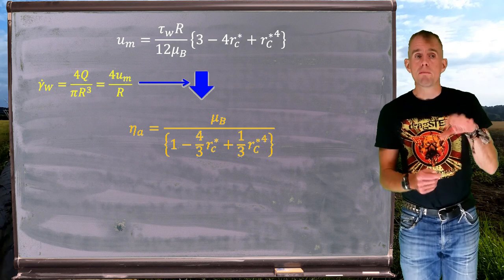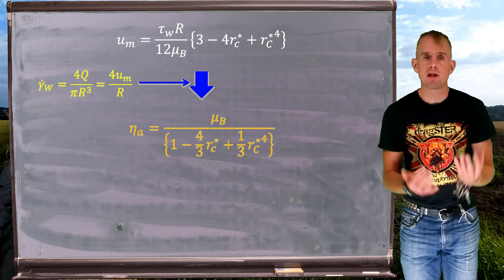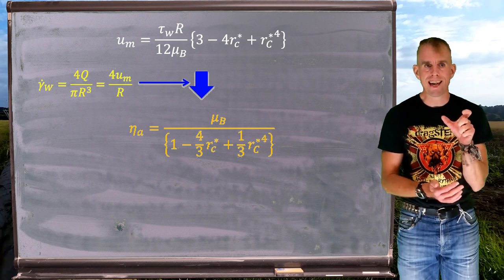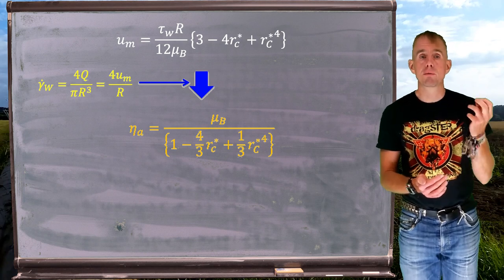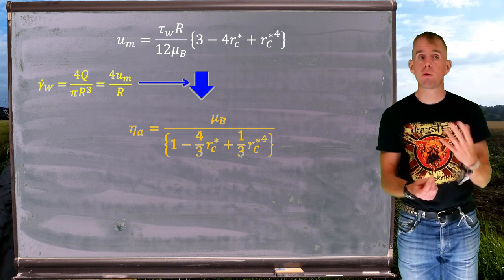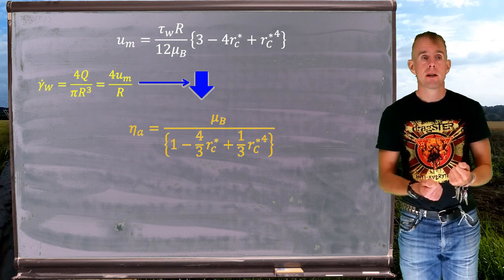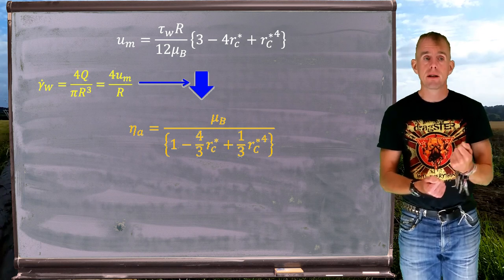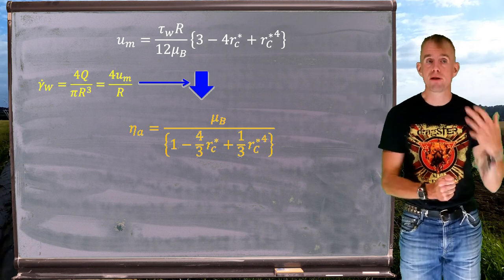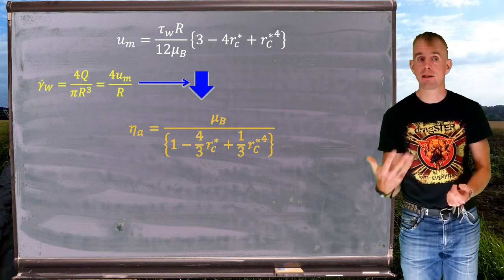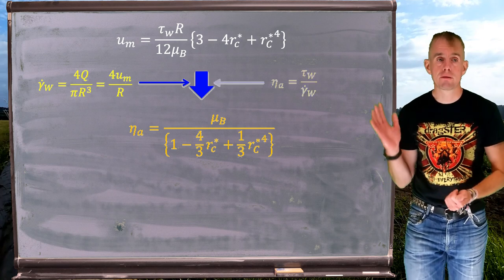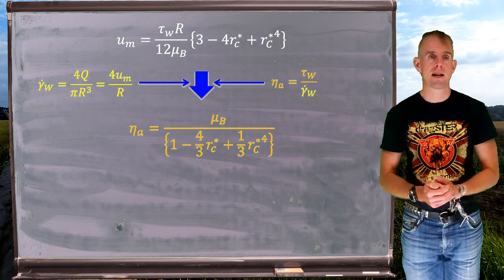We also know, because of our definition of mean velocity as volumetric flow rate over area, we can write the wall shear rate in terms of the mean velocity as 8u_m over R. Luckily we have an expression at the top of the blackboard involving both u_m and τ_w, so a little bit of rearrangement gives us the result shown in orange.